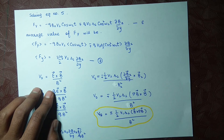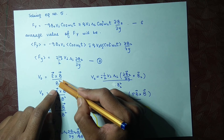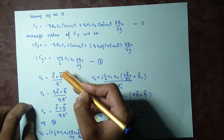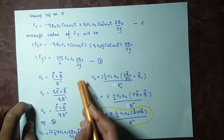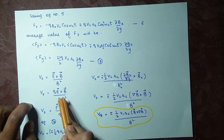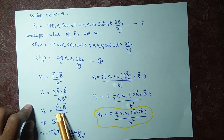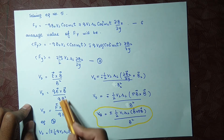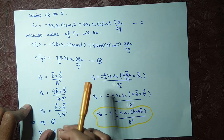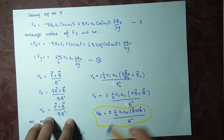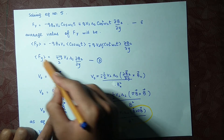We have calculated the drift velocity in previous lectures, which was equal to (E × B) / B². Multiplying q above and below, and knowing that in a cross product a scalar multiplies like this, q·E × B / qB² gives us F × B / qB², since F = qE. This is our formula for the guiding center drift velocity, and we are now going to substitute F as the average force value.